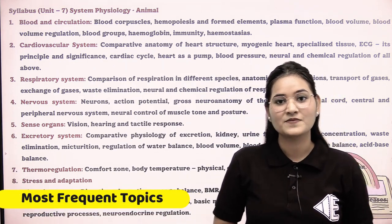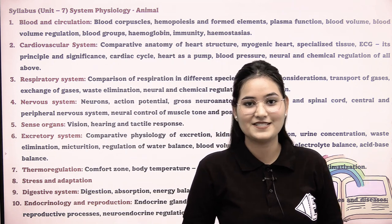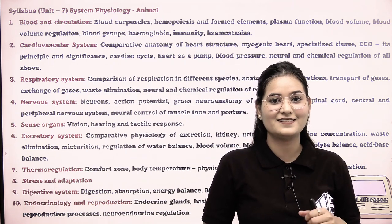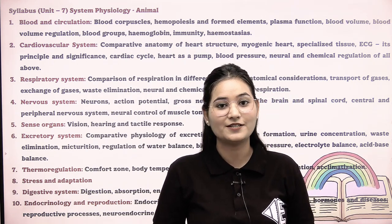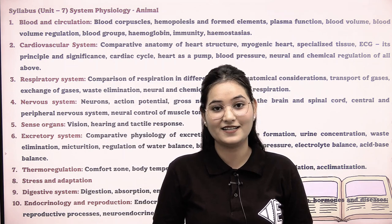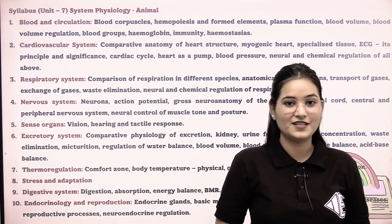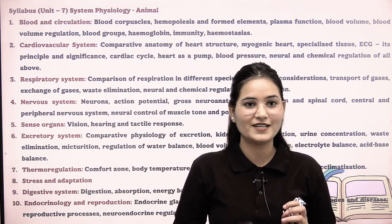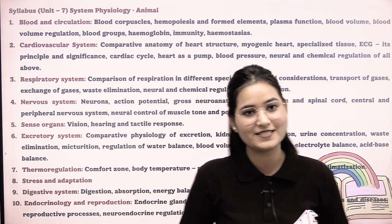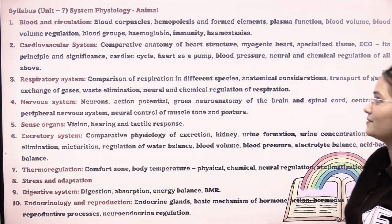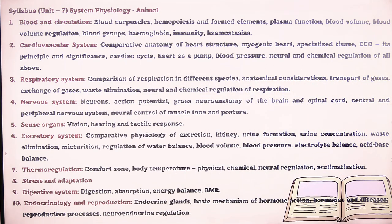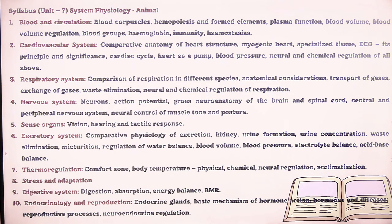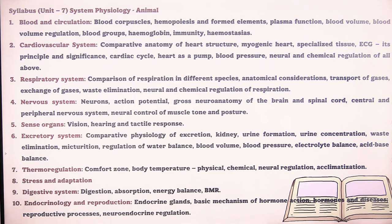There are different systems covered: Nervous System, Respiratory System, Excretory System, and Reproductive System — all of these systems are studied. You have to prepare topics including Blood and Circulation, Cardiovascular System, Respiratory System, Nervous System, Sense Organs, Excretory System, Thermoregulation, Stress and Adaptation, Digestive System, Endocrinology, and Reproduction.